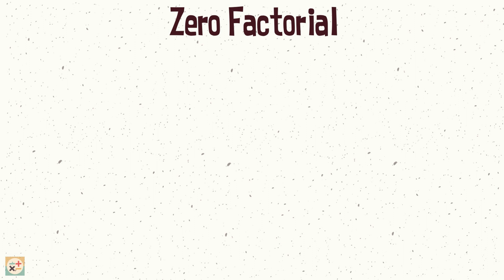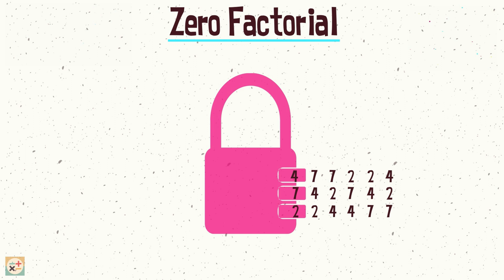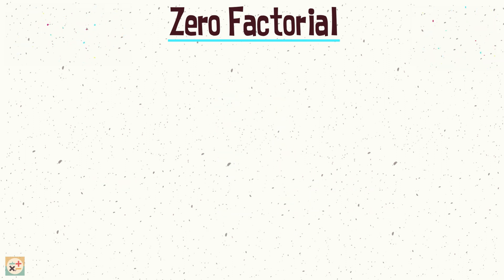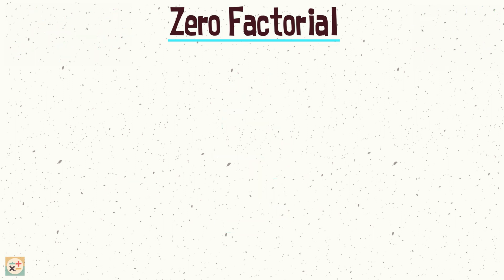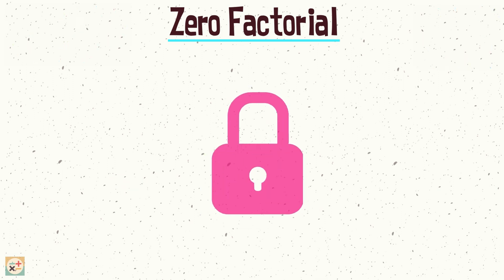Let's have a look at an alternative way of demonstrating why 0 factorial equals 1. Here we have three numbers on a lock, and we want to see how many different ways there are of arranging them. We can see there are six different combinations — we can use 3 factorial to show this. Now let's look at two numbers: we have two different ways of arranging them. With one number there is only one way to arrange it. And finally, with zero numbers, there is still only one way to arrange it.